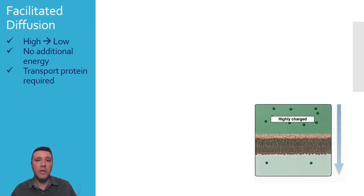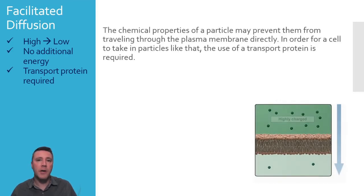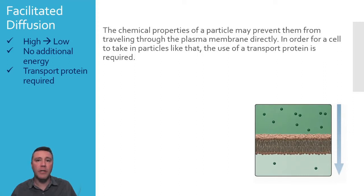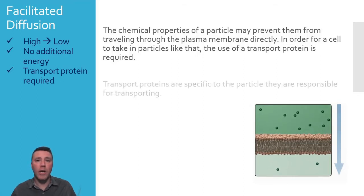Some substances, because of their chemical properties, may be prevented from traveling directly through the phospholipid bilayer. Ions, for example, because of their charged nature, are unable to exist in the water-free environment of the membrane's hydrophobic core. They would therefore rely on transport proteins that are specific to a given ion type.